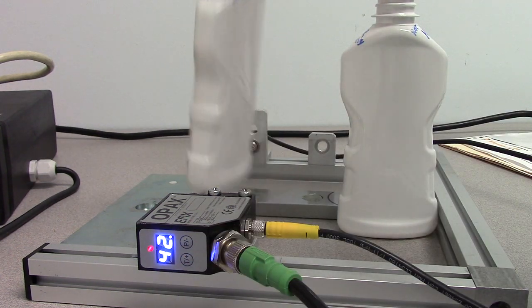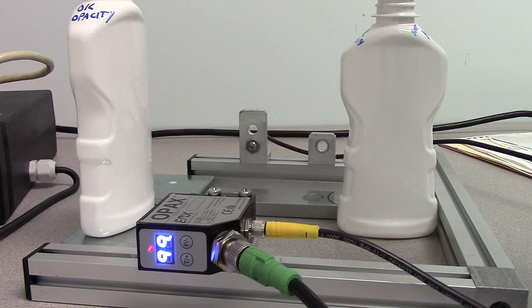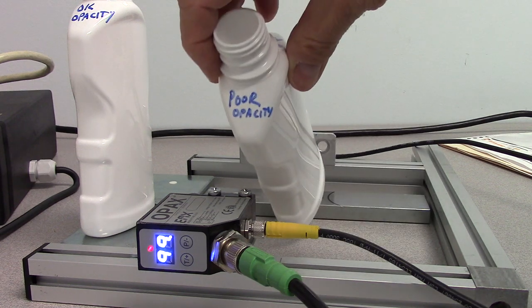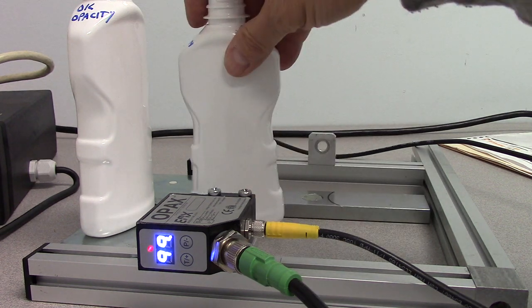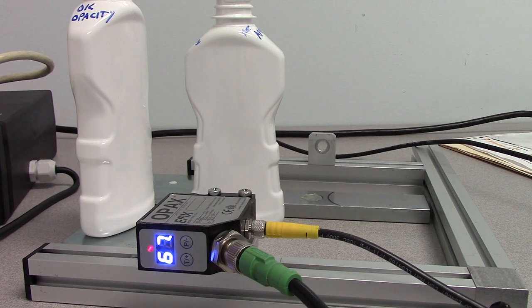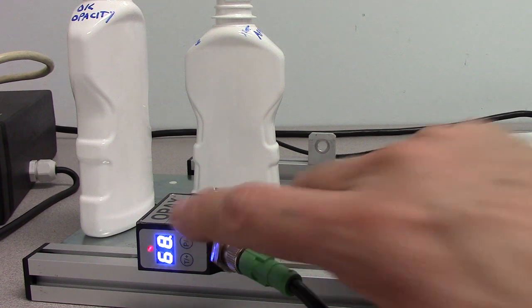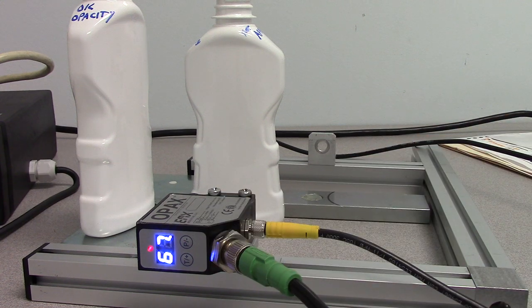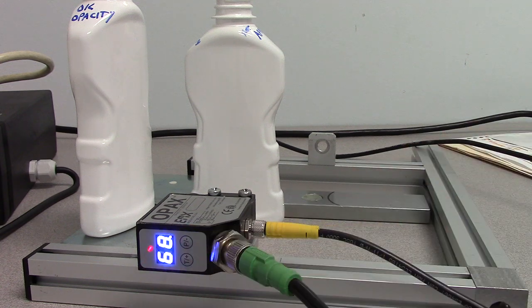This is an acceptable container, and this is an unacceptable poor quality container. You can see the opacity is less than the good container and we're getting a reading of about 68. We're above the threshold level of 50 and the discrete output is activating.